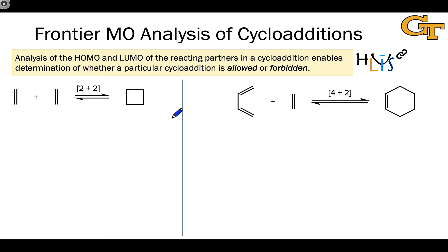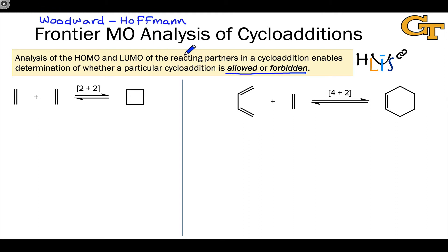Some pericyclic reactions are allowed, and some are forbidden. We're very interested in being able to predict whether a particular pericyclic reaction is allowed or forbidden, or get as much information as we can about how it occurs from an orbital analysis. You may have previously encountered the Woodward-Hoffmann rules, which provide a set of guidelines for allowed and forbidden pericyclic reactions based on relatively simple orbital analysis that could be done on the back of a napkin. We're going to look at that for the three different classes of pericyclic reactions in the remainder of this video.